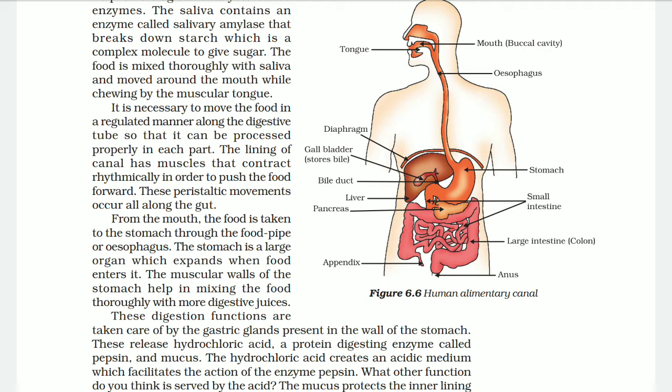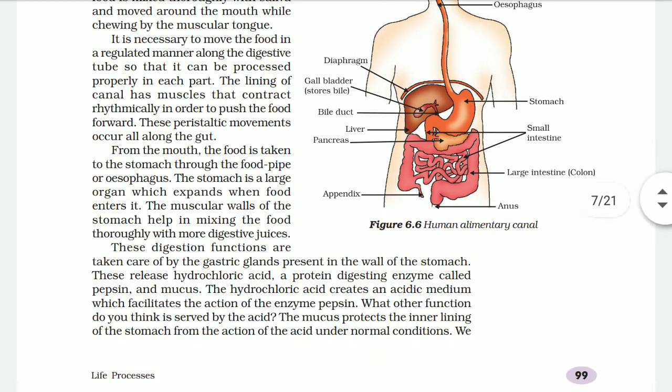The movement through the canal allows the food to get into the stomach from the mouth. Food is taken to the stomach through the food pipe, or esophagus. The stomach is a large organ which expands when food enters it. The muscular wall of the stomach helps in mixing the foods thoroughly with more digestive juice. So with the help of the esophagus — a pipe-like structure — food is brought down towards the stomach, where this muscular organ mixes the food properly.